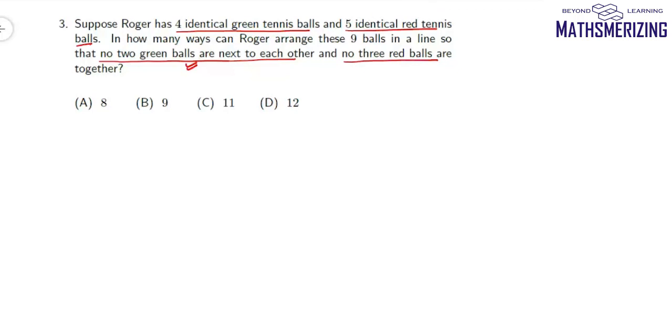So first we'll find in how many ways we can arrange these four green and five red balls so that no two green balls are together. For that, what I'll do is I'll first arrange these five identical red balls. It can be done in factorial five upon factorial five, which is only one way.